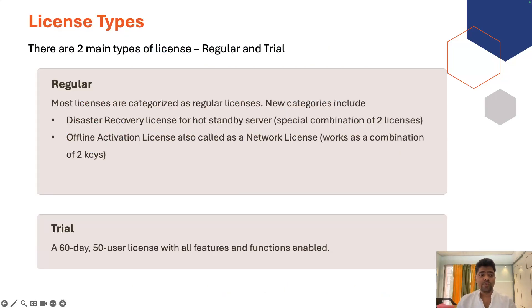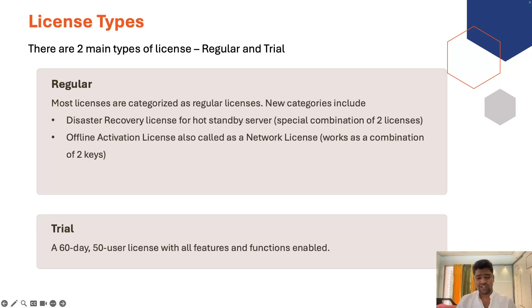License types: there are two major license types — regular and trial. Most licenses are categorized as regular licenses. There are subcategories in a regular license like disaster recovery license, which is specifically for hot standby servers as a combination of two licenses, and offline activation license, also called network license, which works in combination with the product license keys. The trial license is a 60-day, 50-user license with all features and functions enabled.